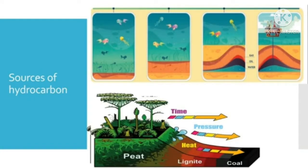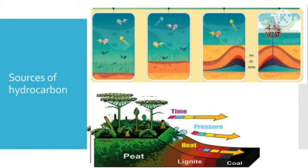Hydrocarbons occur naturally and they are found in fossil fuels like crude oil, natural gas and coal. About 300 million years ago, plants and animals died and they were buried on the ocean floor. Over time, they were covered by silt and soil layers, then buried deep inside the earth and compressed through temperature and pressure and converted to fossil fuels like oil and natural gas. These fuels are found in porous rocks which lie below large bodies of water, especially oceans. By drilling these rocks, hydrocarbons can be extracted.